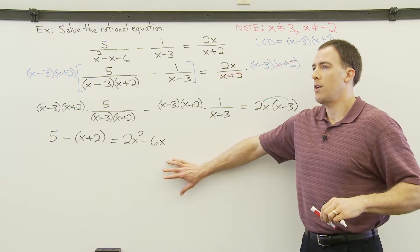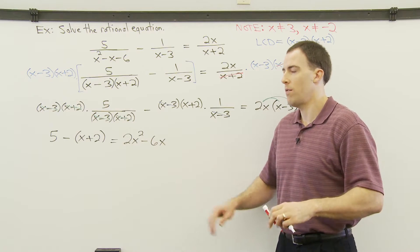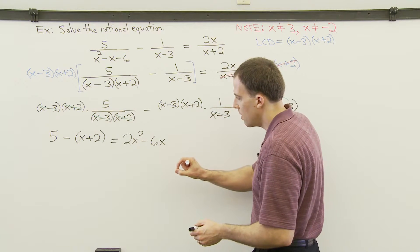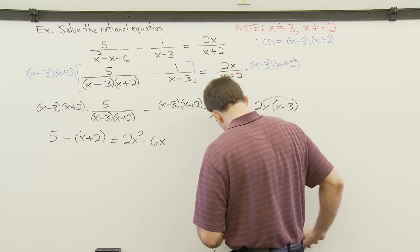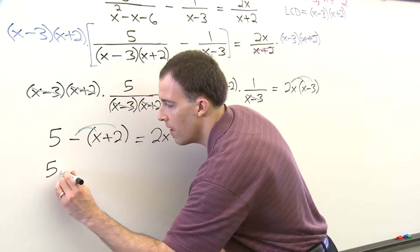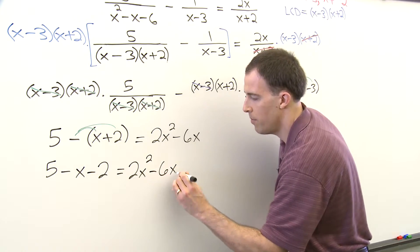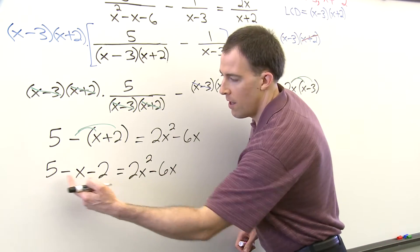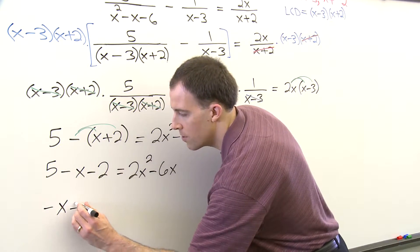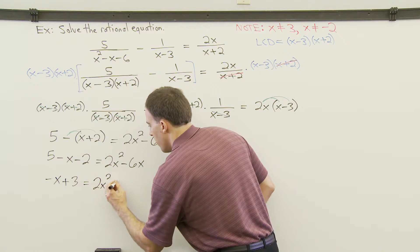The fractions have been cleared from the equation, which is what we needed to do. Anytime you're solving a rational equation, you want to get rid of all the fractions. We've got a quadratic equation now — there's an x squared term — so we'll eventually need to set it equal to 0. First, we distribute the negative sign through the parentheses: 5 minus x minus 2 equals 2x squared minus 6x. Combining like terms on the left, 5 minus 2 is 3, giving us 3 minus x equals 2x squared minus 6x.